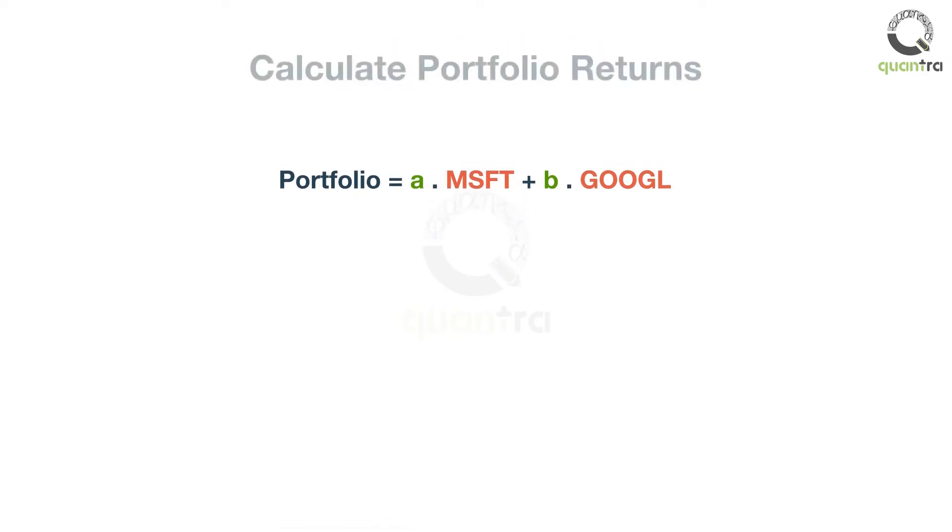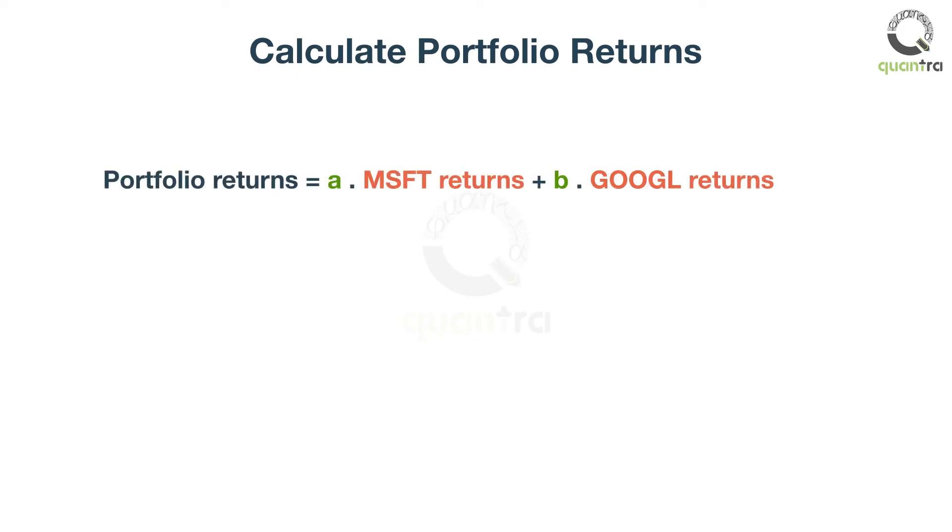To calculate average daily returns of the portfolio, you will need annualized returns of Microsoft and Google. The annualized returns of Microsoft and Google are 17.81% and 24.99% respectively. These are calculated for a period of two years, from January 2016 to December 2017. This period is arbitrarily chosen.